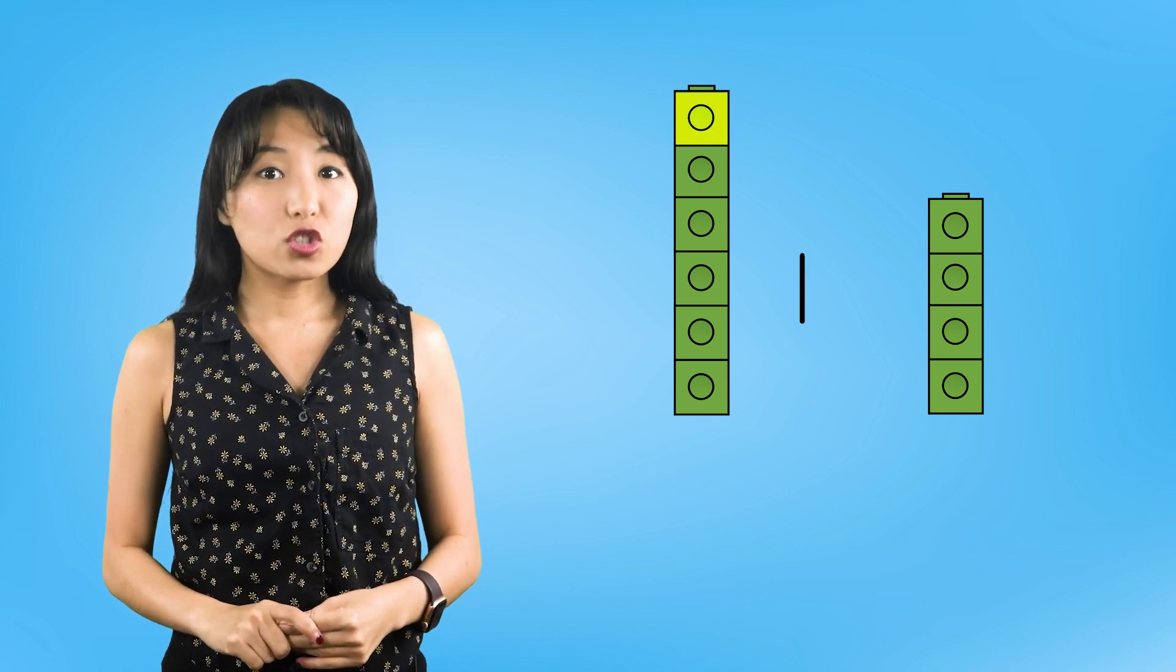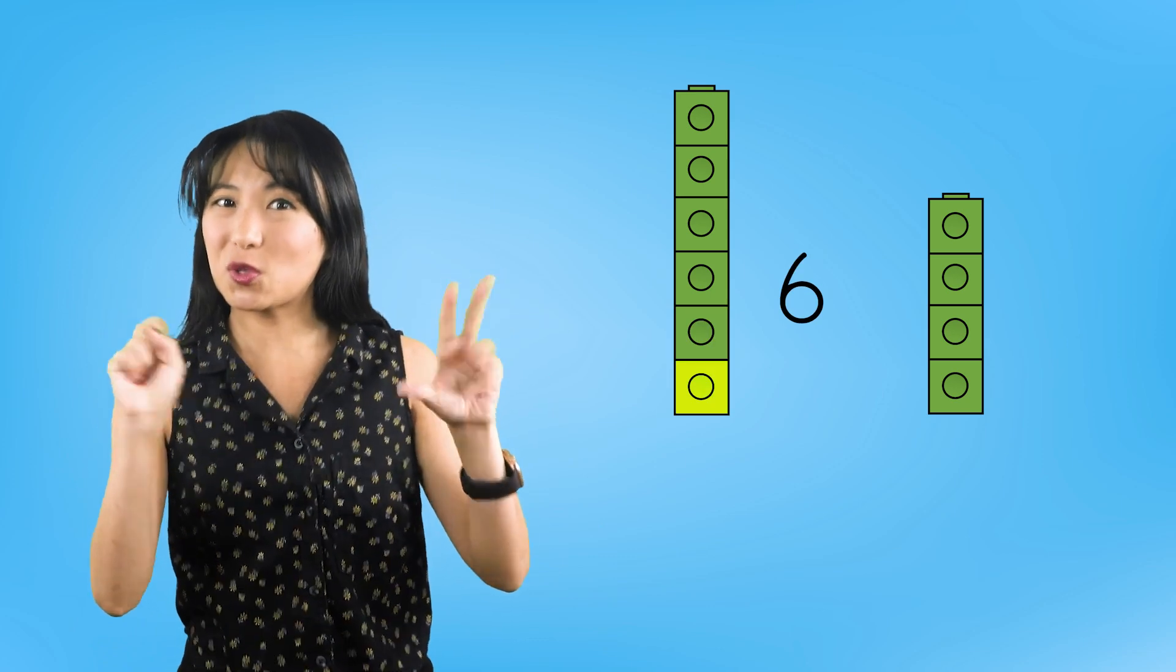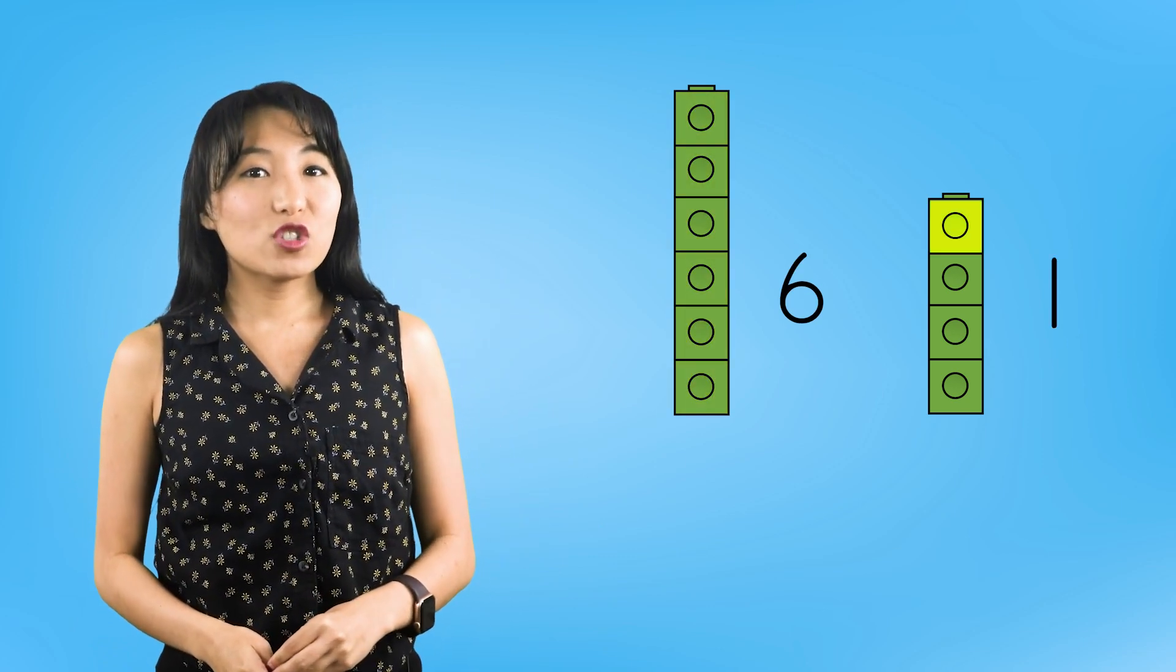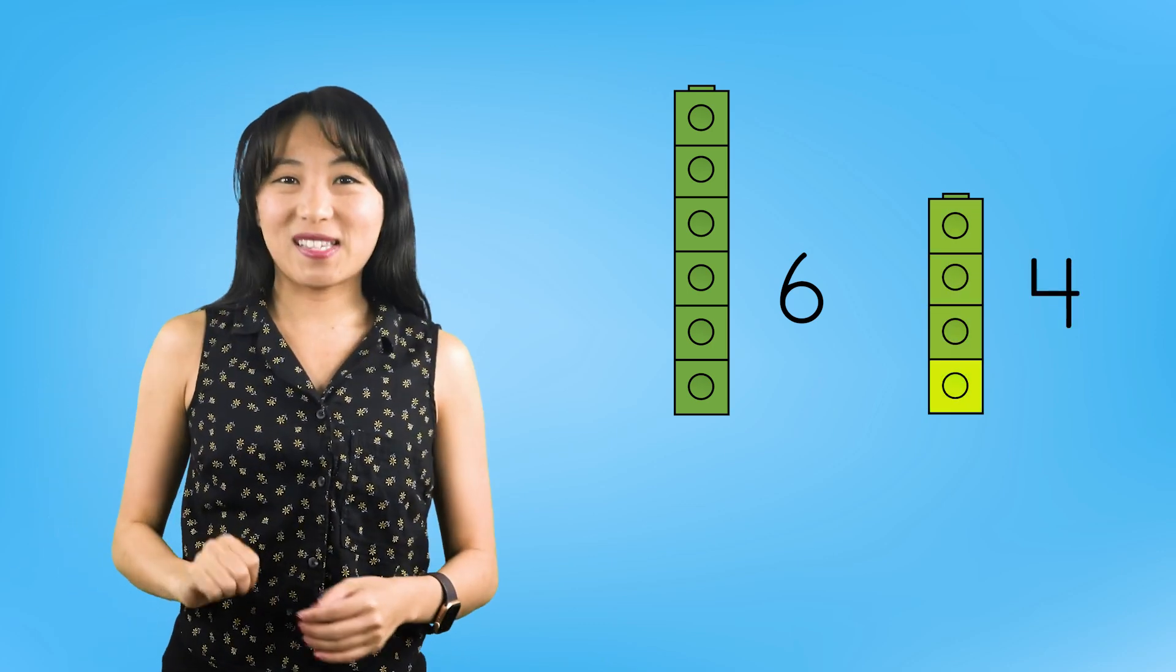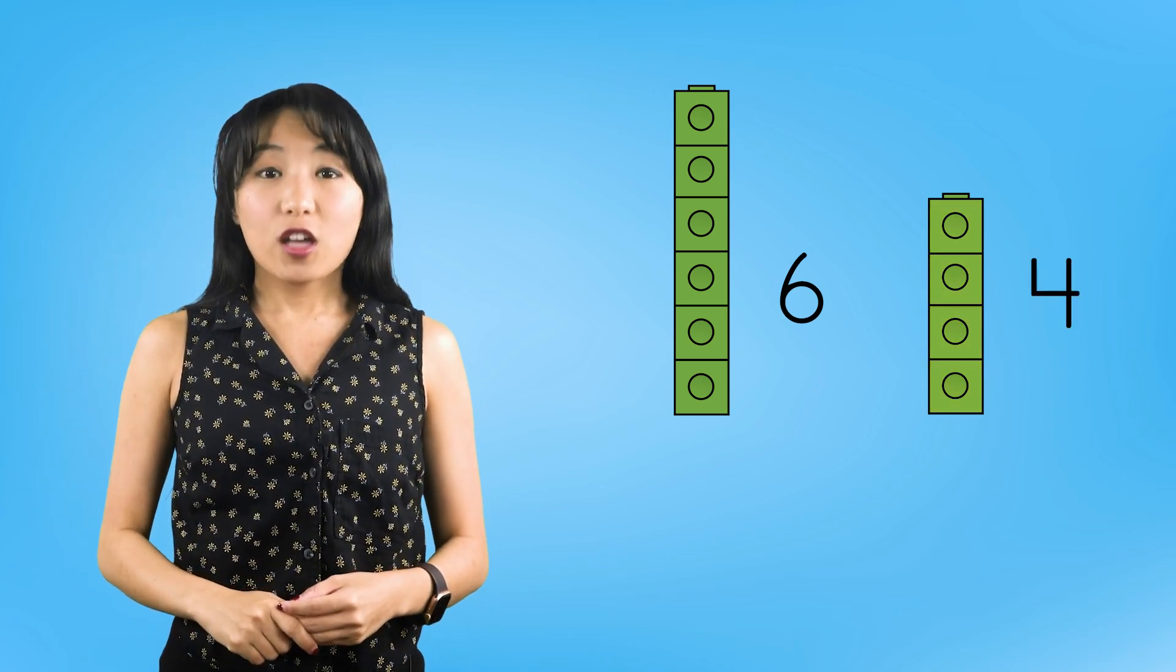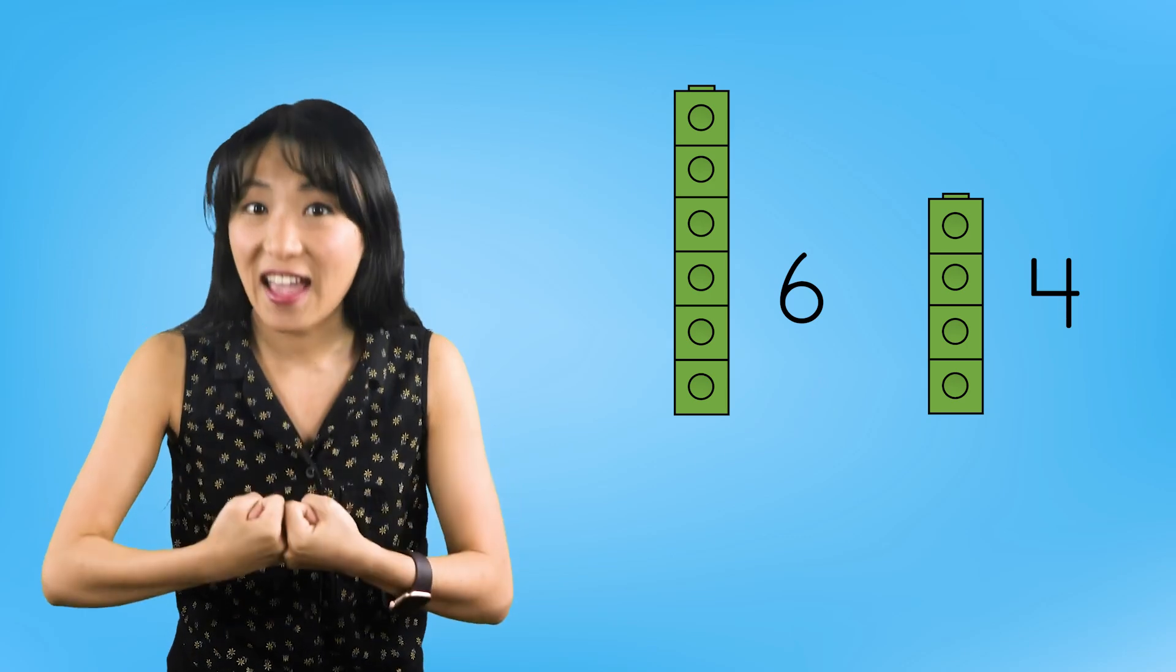Let's find out how many cubes are in each part. 1, 2, 3, 4, 5, 6 cubes in this part and 1, 2, 3, 4 cubes in this part. So the parts 6 and 4 make up the whole of 10.